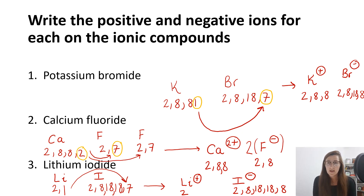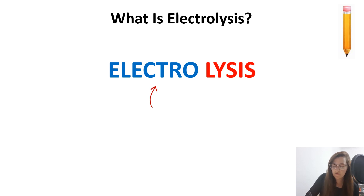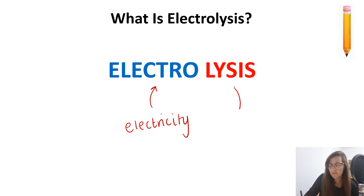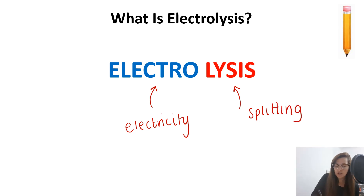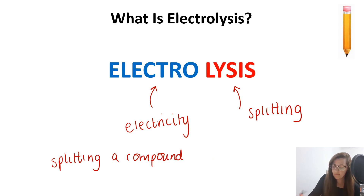In all of these ionic compounds we have both a positive metal ion and a negative non-metal ion, and that is going to become really important as we go on to discuss electrolysis. The word splits into two parts: 'electro,' which sounds like electricity, and 'lysis,' which means splitting. So the definition of electrolysis is splitting a compound using electricity.